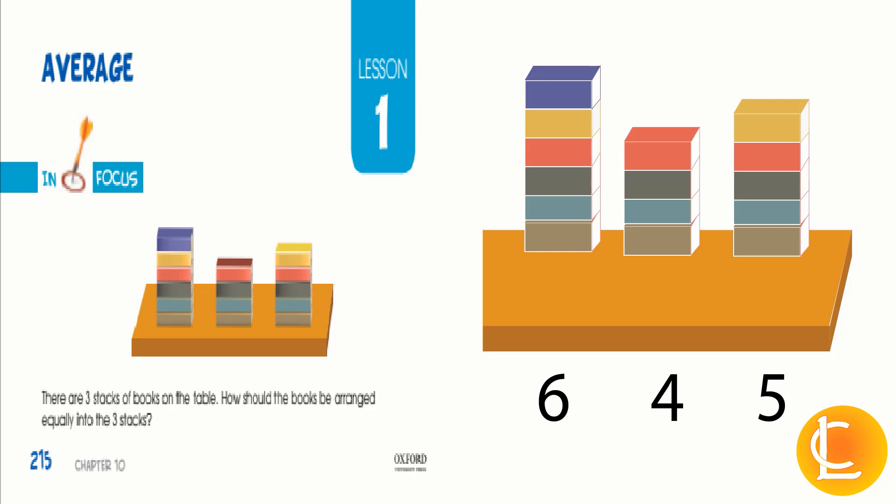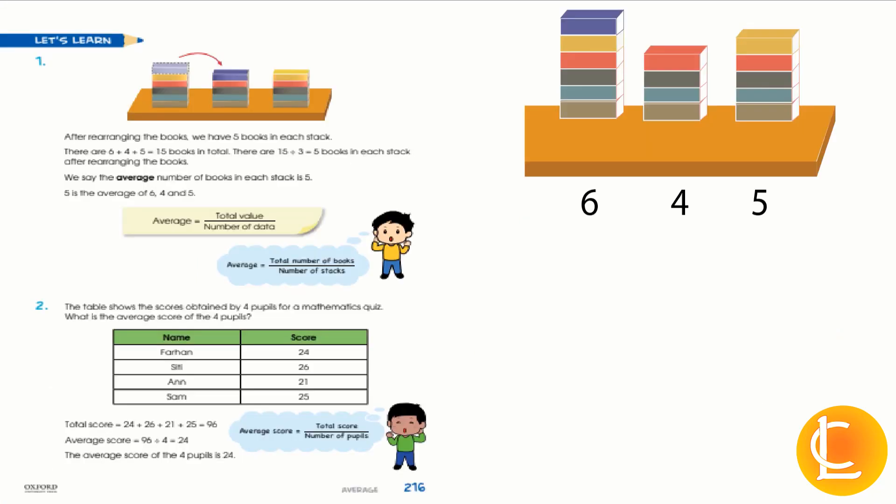So, how will we arrange them? Let's check it out. According to the average formula, average equals total value divided by number of data. So, we will write six plus four plus five in the total value and divide it by the number of data.